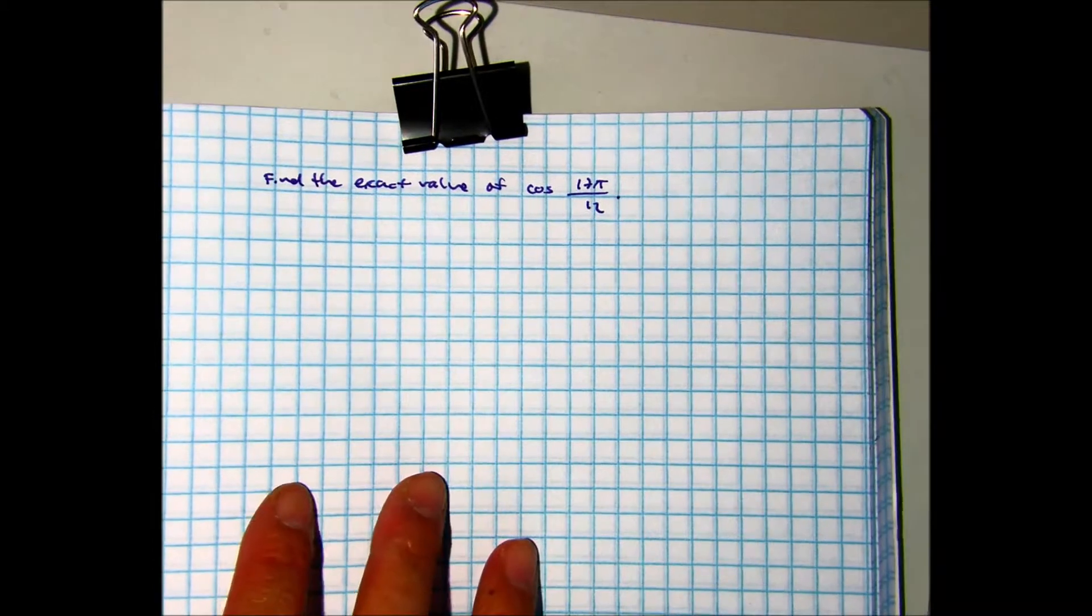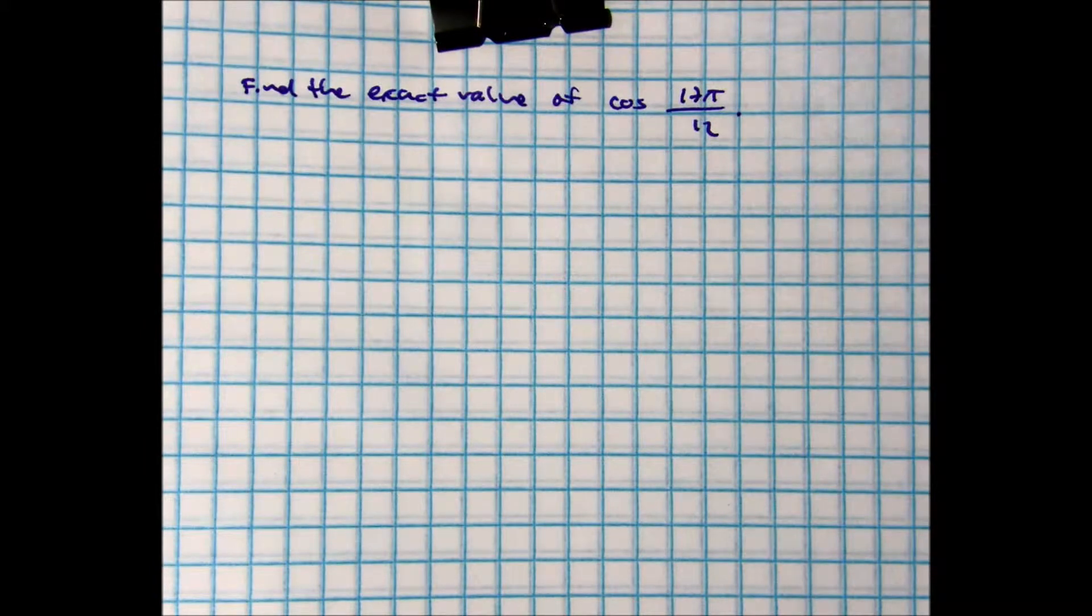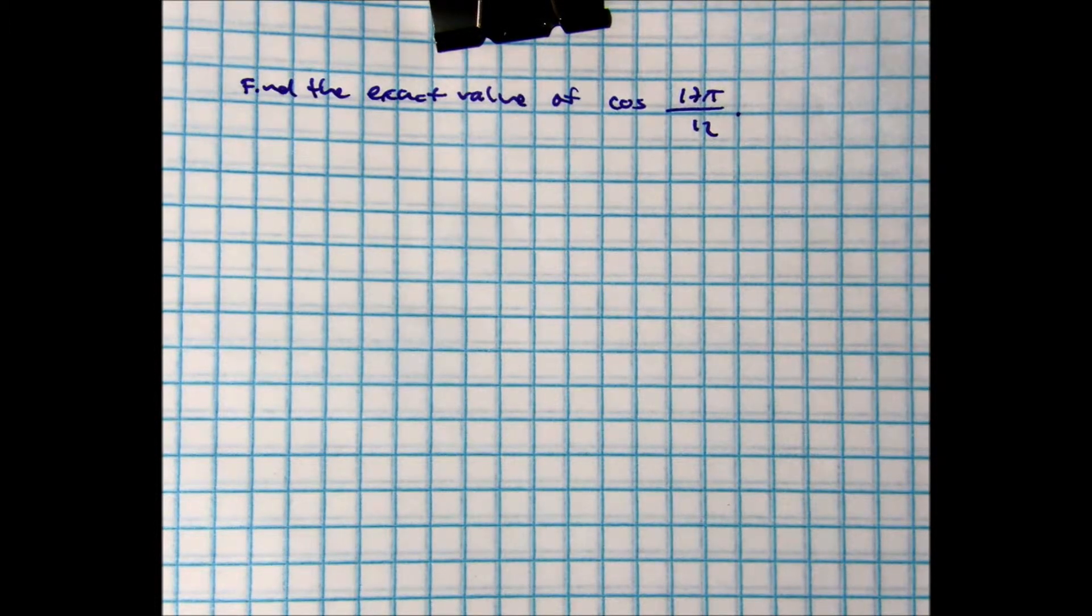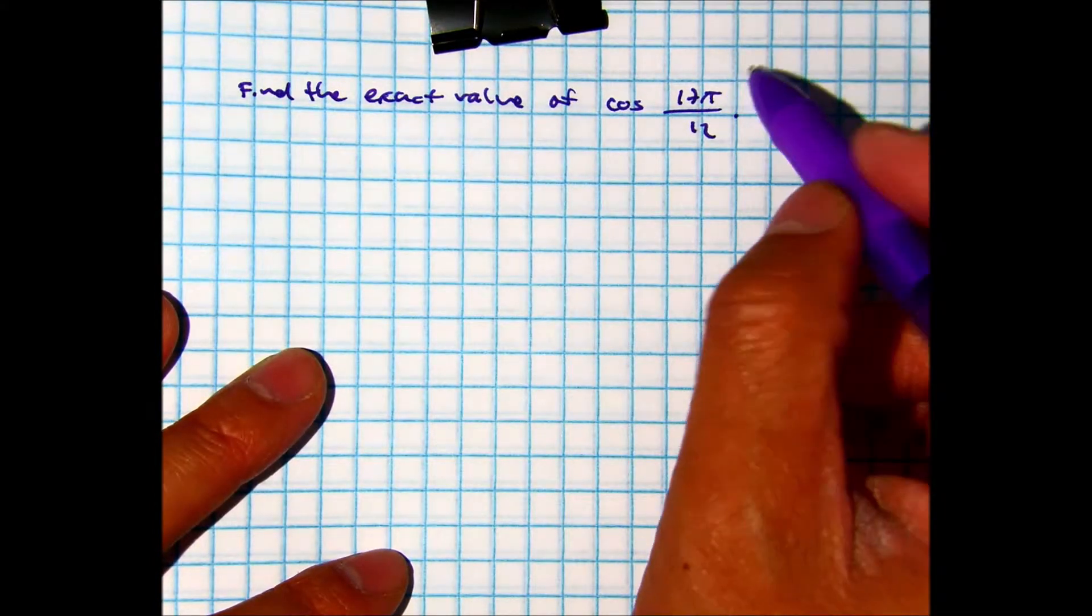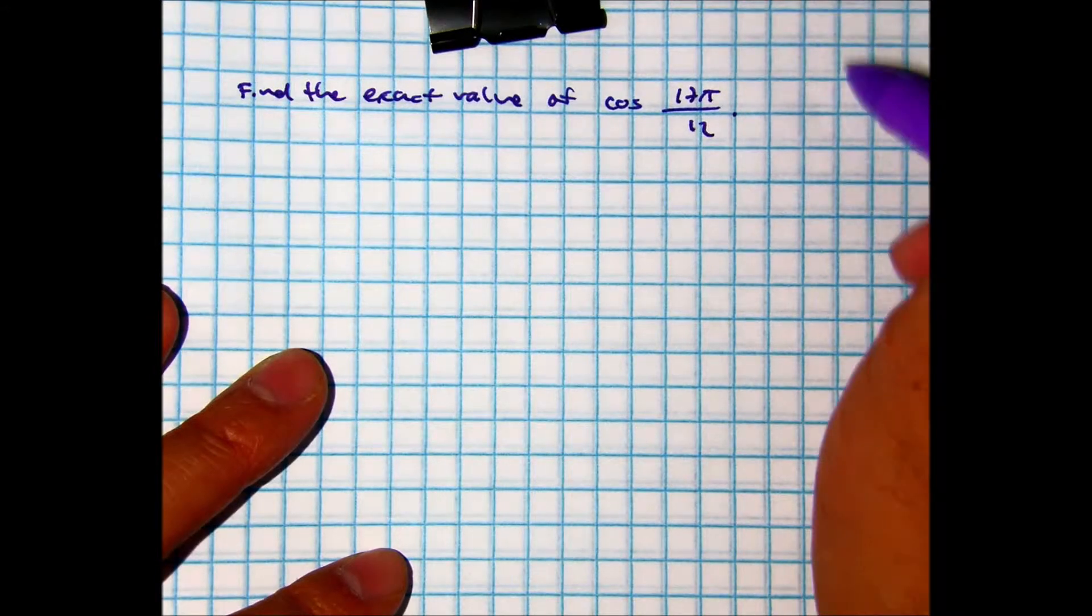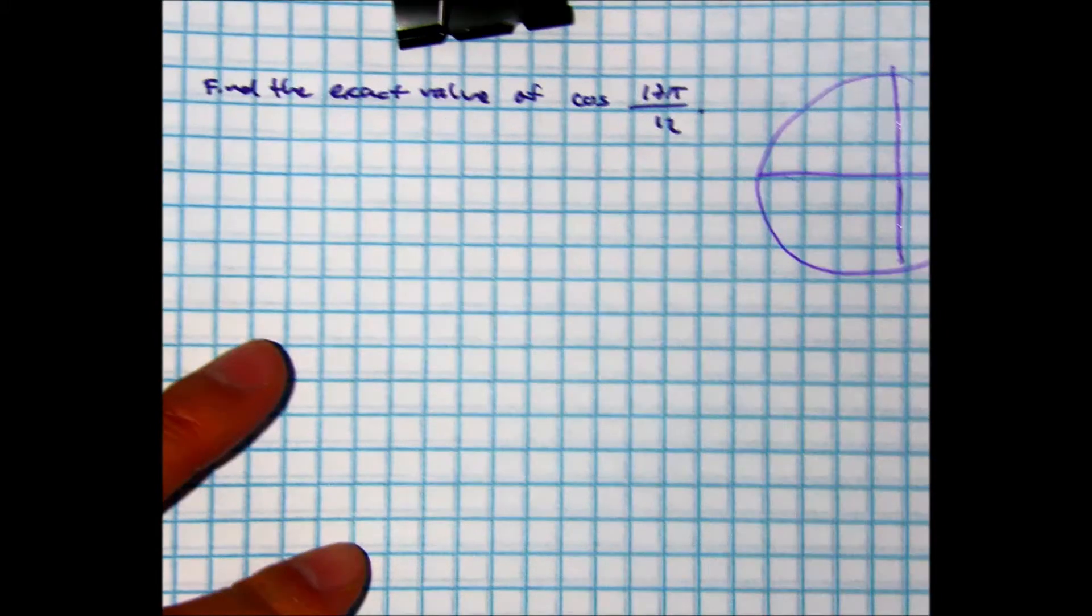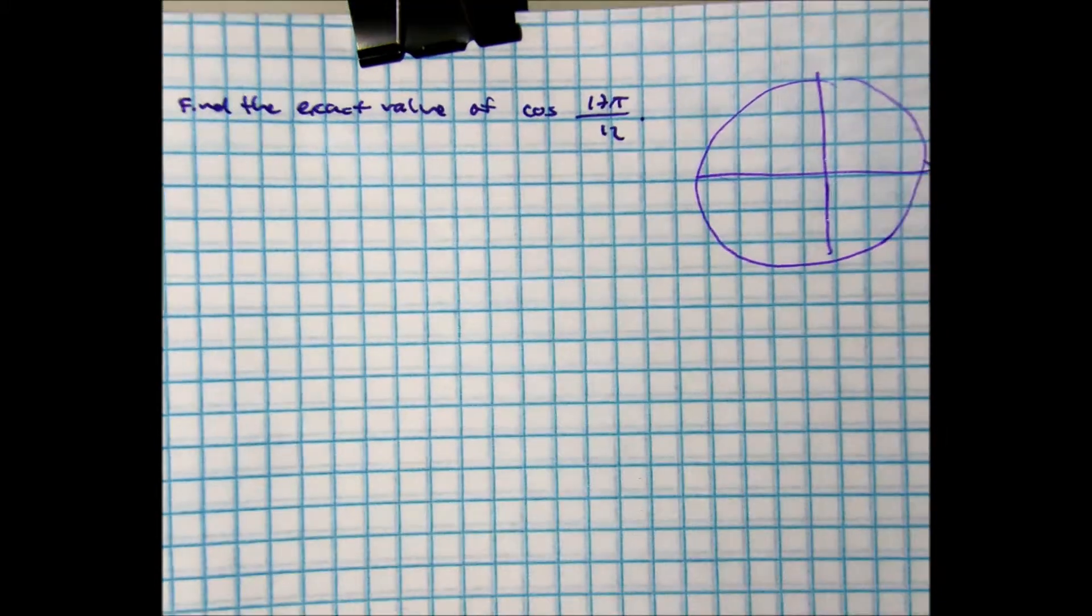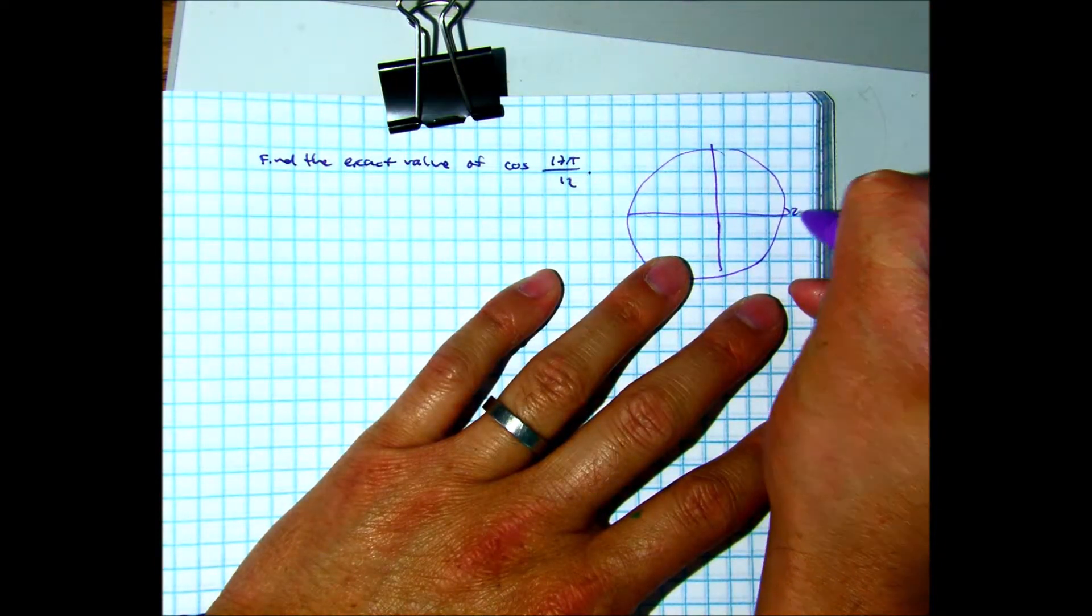Alright, we're going to find the exact value of cosine of 17 pi over 12. Okay. So let's think about it. I need something quite large, right? Let's think about it in the center of the unit circle. This equivalent would be 0 pi, or 24 pi over 12.